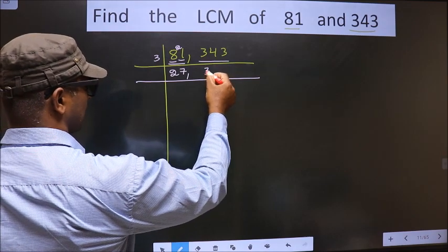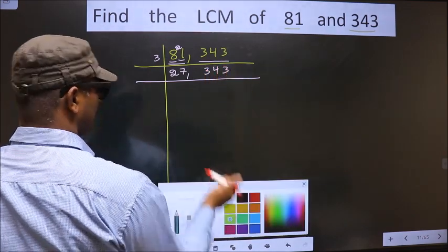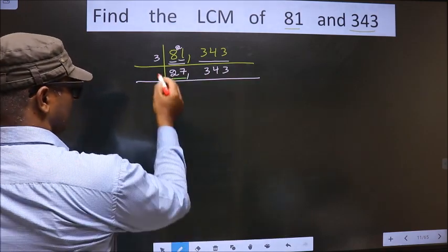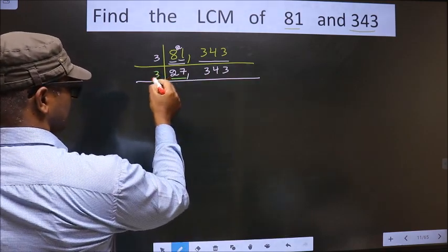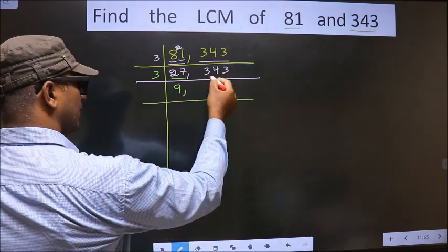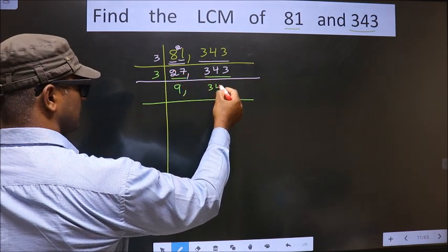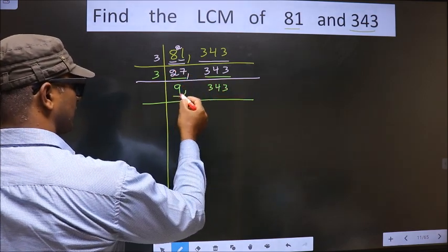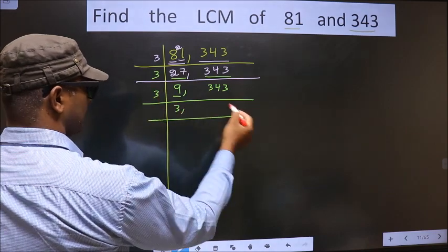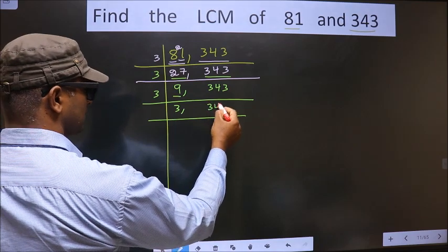We write down 343 as it is. Now here we have 27. 27 is nothing but 3 nines 27. Again 343 is not divisible by 3, so we write it down as it is. Now here we have 9. 9 is nothing but 3 threes is 9. 343 is not divisible by 3, so we write it down as it is.